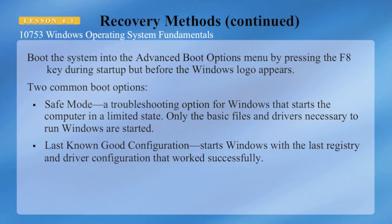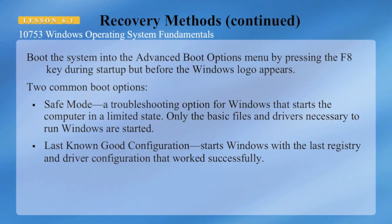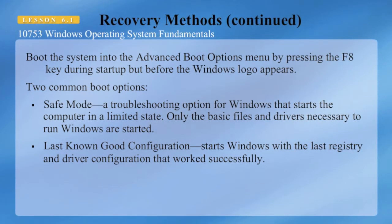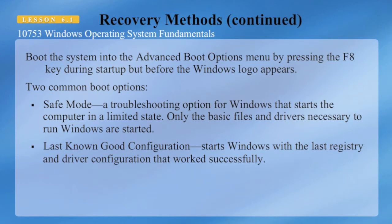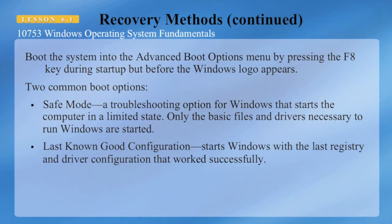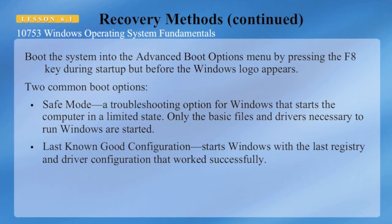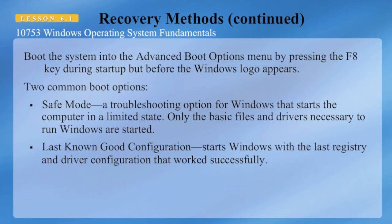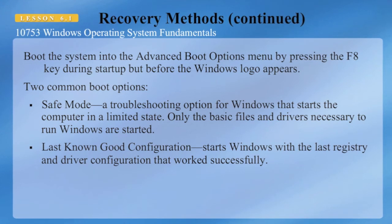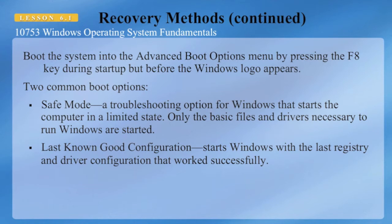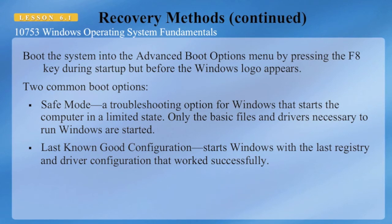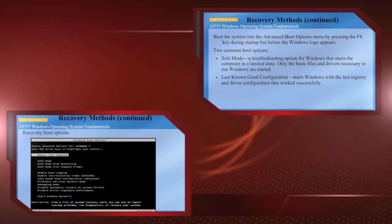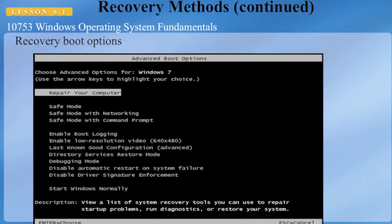When you're ready to recover your system, boot into the Advanced Boot Options menu by pressing the F8 key during startup, before the Windows logo appears. Two common options are: Safe Mode, a troubleshooting option that starts Windows in a limited state with only the basic files and drivers necessary to run Windows; and Last Known Good Configuration, which starts Windows with the last registry and driver configuration that worked successfully — useful when a newly installed driver causes the system not to boot.